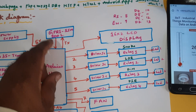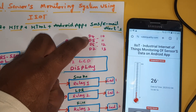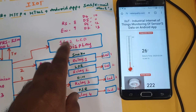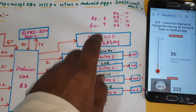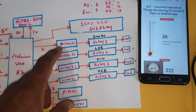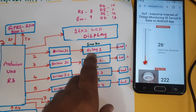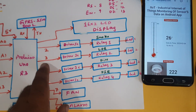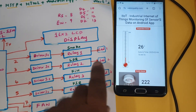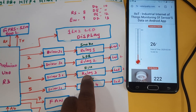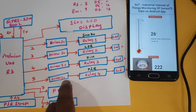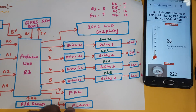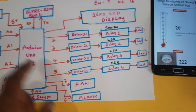GSM SIM900A module is connected to RX/TX pins 0 and 1. A 16x2 LCD display is connected with RS, Enable, D4, D5, D6, D7 on GPIO pin numbers 8 through 13. Whatever process is going on will be displayed on the LCD. Driver IC BC547 transistor: second pin for smoke sensor LED output, third pin for LDR output, fourth pin for fire sensor relay output, and fifth pin GPIO 15 for driver IC relay coil and PIR sensor LED output.